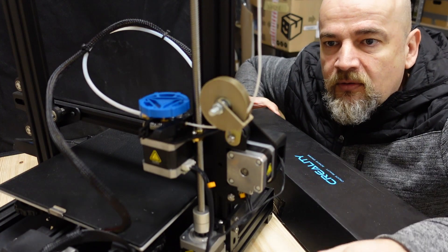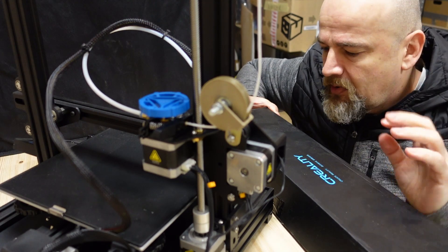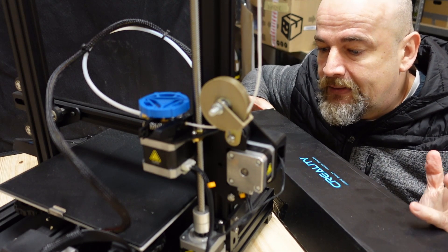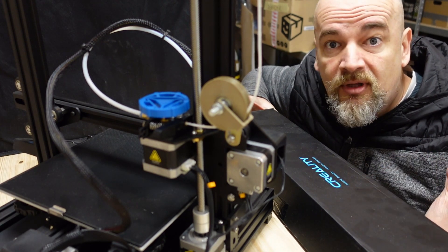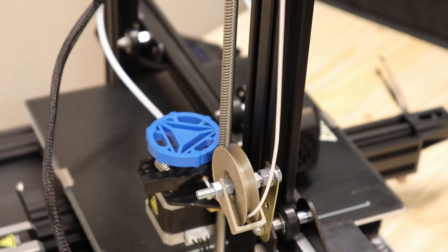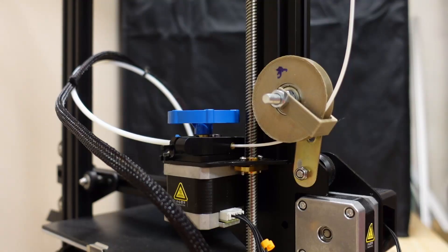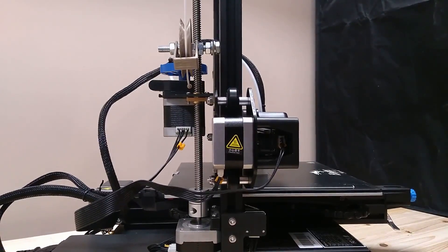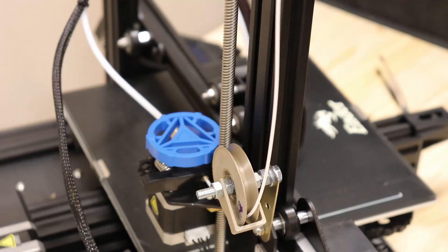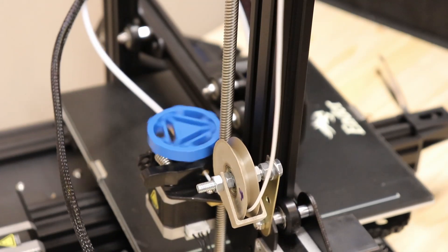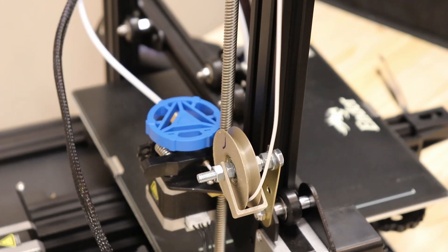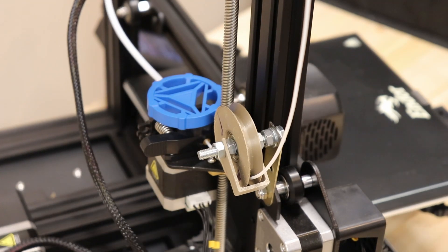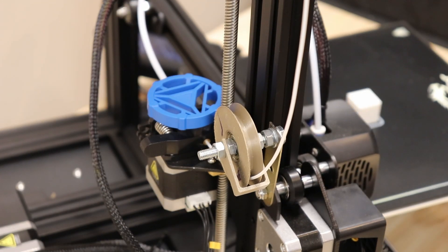Well, this was my first upgrade on Ender 3 V2. The next one will be probably the dual Z-axis. I hope you will follow me to that video too. And now it's time to print something.